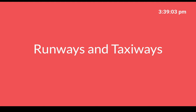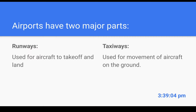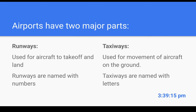Let's talk about runways and taxiways. Runways are used for aircraft to take off and land, while taxiways are used for movement of aircraft on the ground. Runways are named with numbers, and taxiways are named with letters.